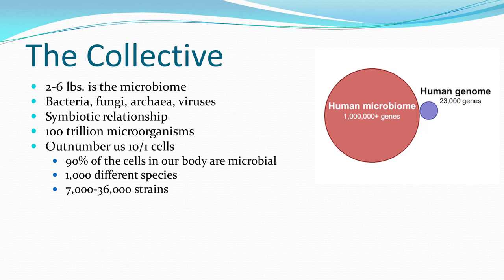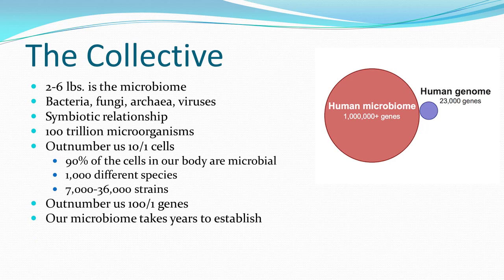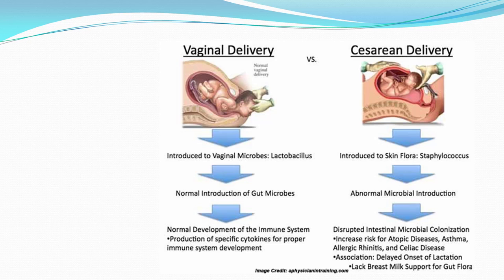Our microbiome can take years to establish, and something concerning: one-third of babies born in the United States are now born by C-section. In normal vaginal delivery, shown on the left-hand side of the screen, the baby passes through the vaginal canal, presented face down. There's compression of the digestive tissues, and urine and feces are present — that's appropriate, because the child who has been aseptic within the uterus is now being inoculated with microorganisms from mom and dad.